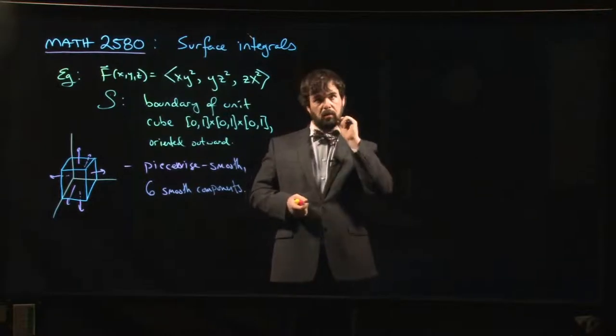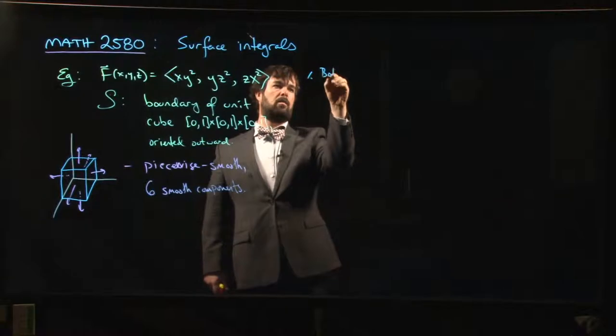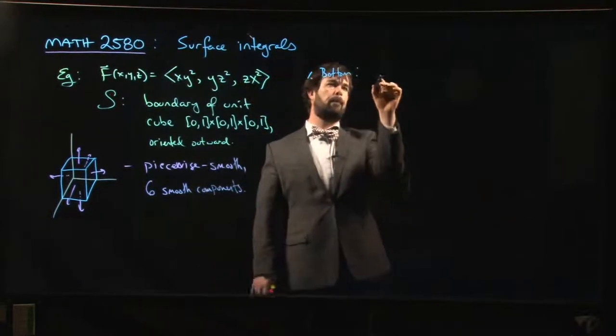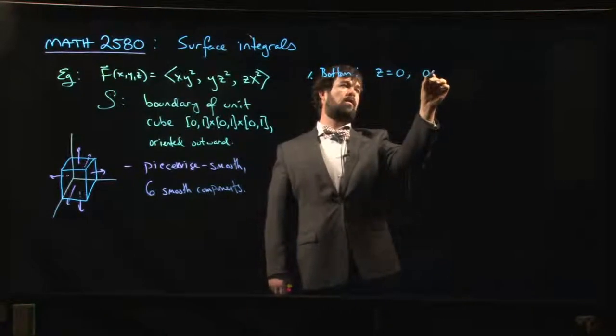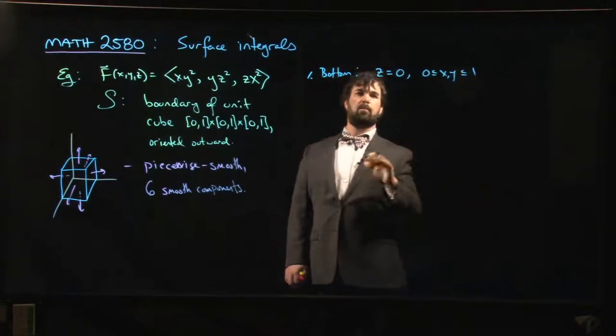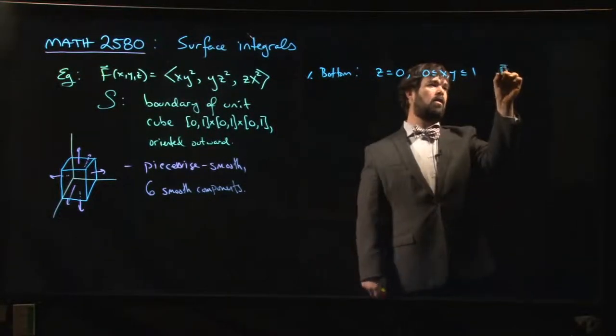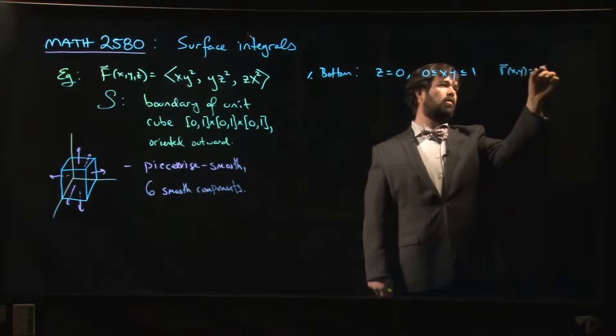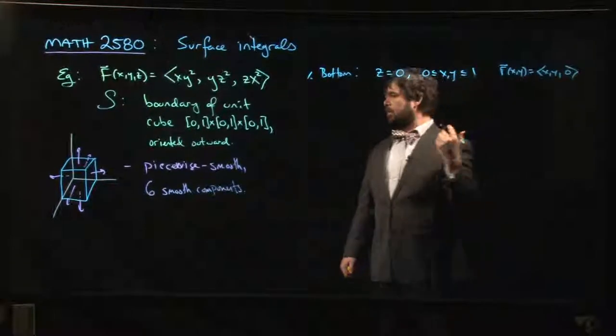So let's work with the bottom. On the bottom, z is 0 and x and y are between 0 and 1. So the natural parameterization to take here, r of x,y, is going to be (x, y, 0).